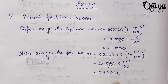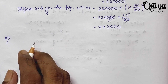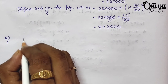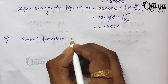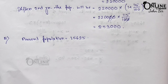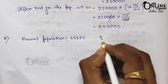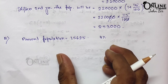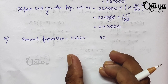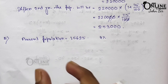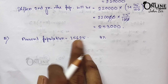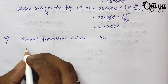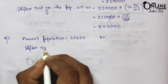Sum number two: the present population of a town is 15,625. Write down the present population equals 15,625. If the population increases at the rate of 4 percent every year, what will be the increase in the population in the next three years? First you have to find out the population after three years, then subtract the present population from it.